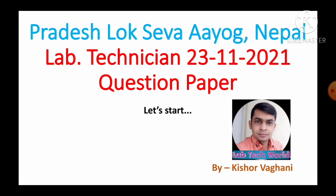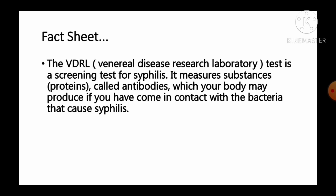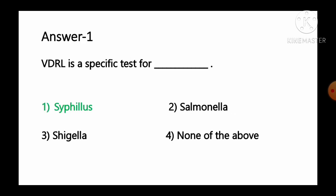Let's start today's question paper. Question number 1: VDRL is a specific test for — option 1 syphilis, option 2 salmonella, option 3 shigella, option 4 none of the above. The VDRL, that is Venereal Disease Research Laboratory test, is a screening test for syphilis. It measures substances called antibodies which your body may produce if you have come in contact with the bacteria that causes syphilis. So it is a specific test for syphilis. Option number 1 is the correct answer.